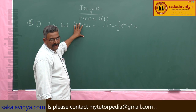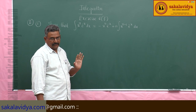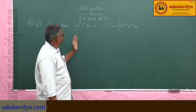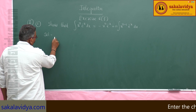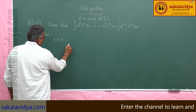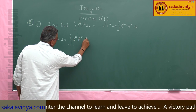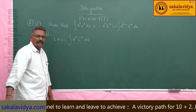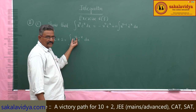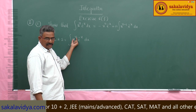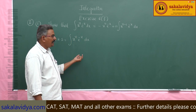Let us consider the left hand side and apply integration by parts. Left hand side: integral of x to the power of n, e to the power of minus x dx. In this problem, let us take the first function as x to the power of n, the algebraic function, and e to the power of minus x as the exponential function, using the LIATE rule.